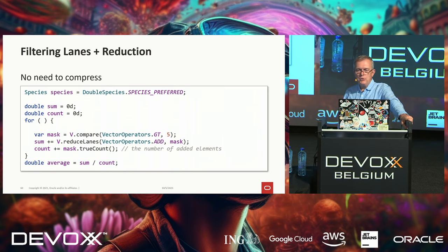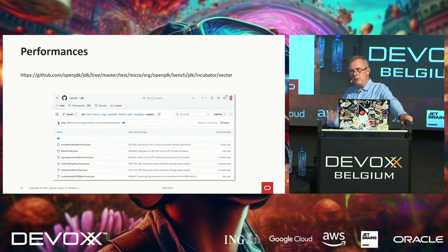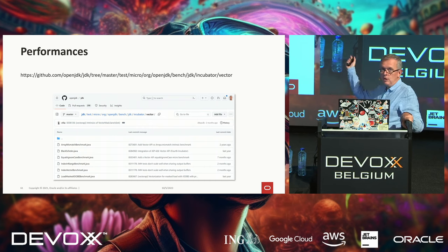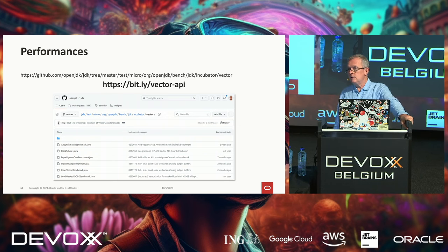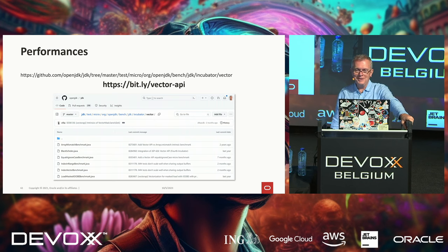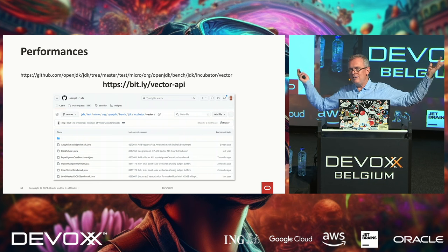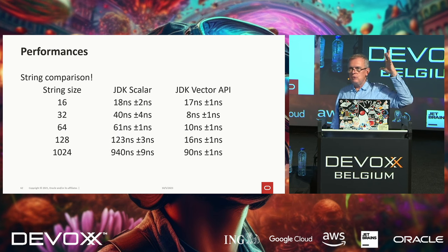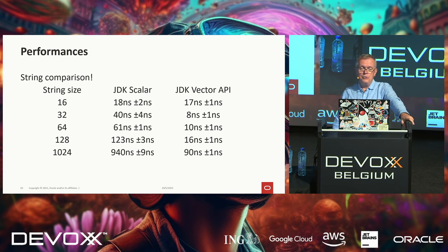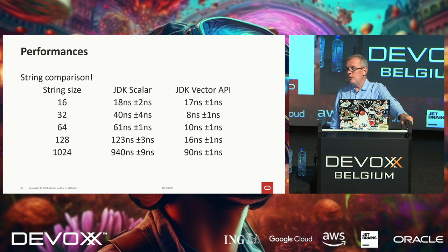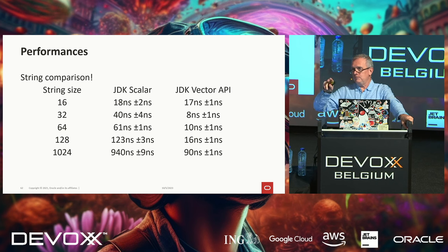That's how you can do map/filter/reduce with the Vector API. If you want to know more, there is a very interesting page on the OpenJDK GitHub repository. On performance: it really depends on the hardware you're running on. For string comparison using this API, the scalar version's time grows linearly with string length, while the Vector API version also grows but with much better performance — for a string of 1K characters you get almost a factor of 10 speedup without relying on concurrent programming.